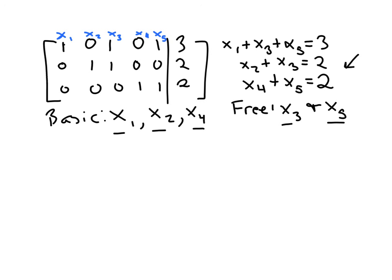So the next thing you should do in a system like this, a dependent system, is to take those three equations and solve them for the basic variables. So that first equation you can solve for x1 just by moving the other two variables over. So that'll be x1 equals 3 minus x3 minus x5.